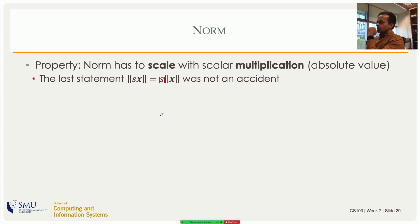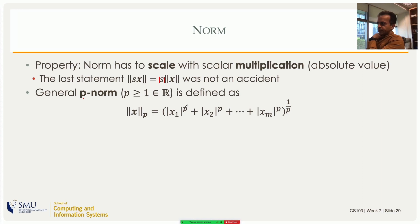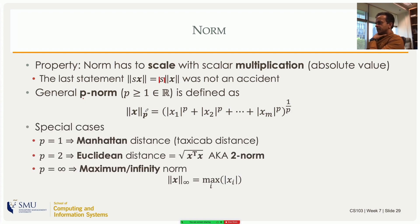The fact that the norm scales with scalar multiplication in absolute value is baked into the notion that the norm is the length or size of the vector. In addition to the Euclidean norm, we can define a general p-norm where p is any real number greater than or equal to 1. The p-norm of x is the sum of the absolute values of each component raised to the power p, then taken to the 1/p power — i.e., the pth root. If you scale by s, the p-norm scales by the absolute value of s.